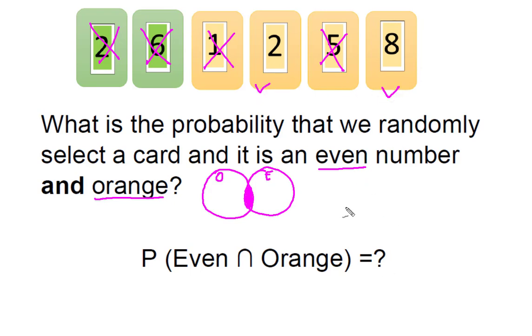So I only want the ones that are both even and orange. And so for this, because it's a pretty simple example, I know that the probability of me randomly selecting a card and getting one that is both even and orange is two out of six. And remember that we always talk about probabilities in terms of percentages. So reduce that fraction down, carry it out to a couple decimal places, make it a percentage and you're done.